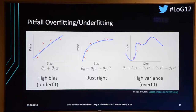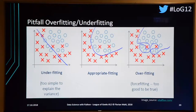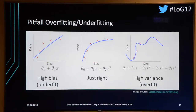The first pitfall is overfitting and underfitting. Overfitting is when you train your classifier on some data, but fit it too closely to that training data. When you test on new data — which will differ slightly — your classifier no longer generalizes well.